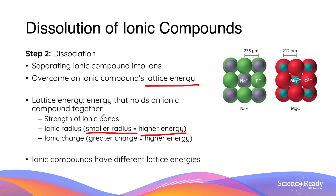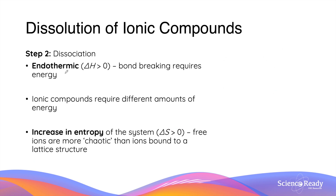The most important concept here is that ionic compounds have different lattice energies. For example, sodium fluoride and magnesium oxide have different lattice energies because they have different ionic radii and ionic charges. Breaking ionic compounds during dissociation is also endothermic as it requires energy input, and since ionic compounds have different lattice energies, they require different amounts of energy. The entropy of the system further increases during this process as the ions are able to move around more freely compared to when they are organized in a lattice structure.